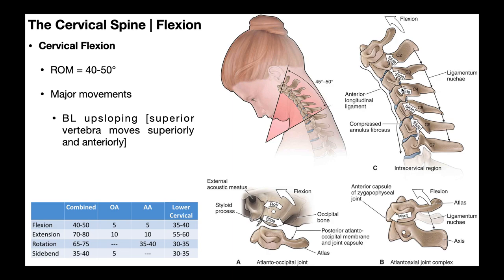Now, if we think about the discs in between these vertebrae, remember that the outer rim is the annulus fibrosis. Whenever we go into cervical flexion, it puts a little more pressure on the disc anteriorly. So anteriorly speaking, this annulus fibrosis gets compressed a little bit during cervical flexion. It's not a pathological compression — it's just more compressed than it would be posteriorly.